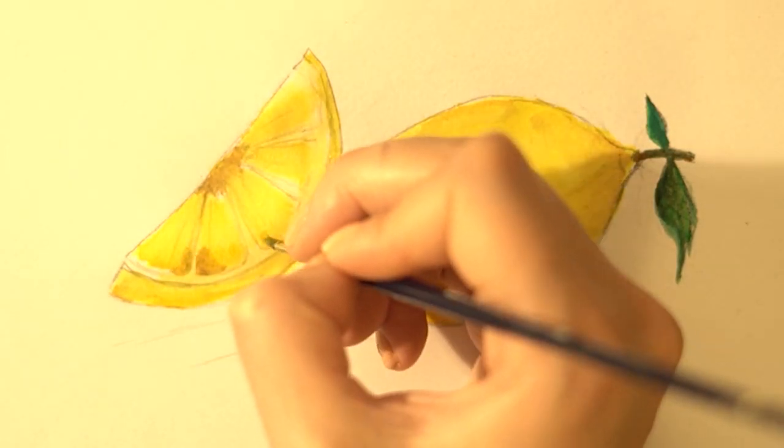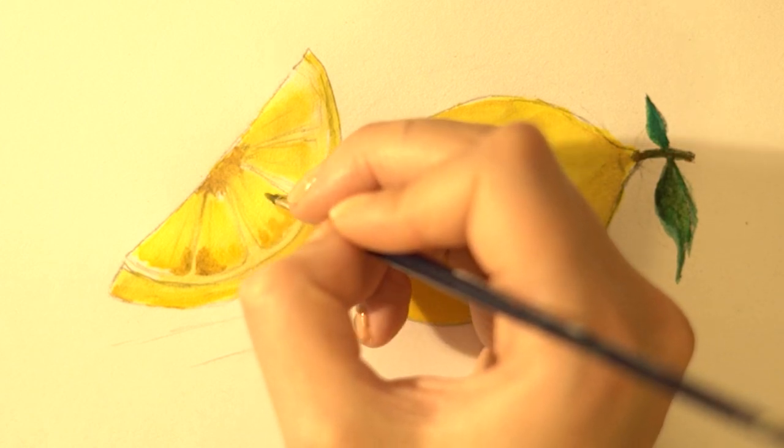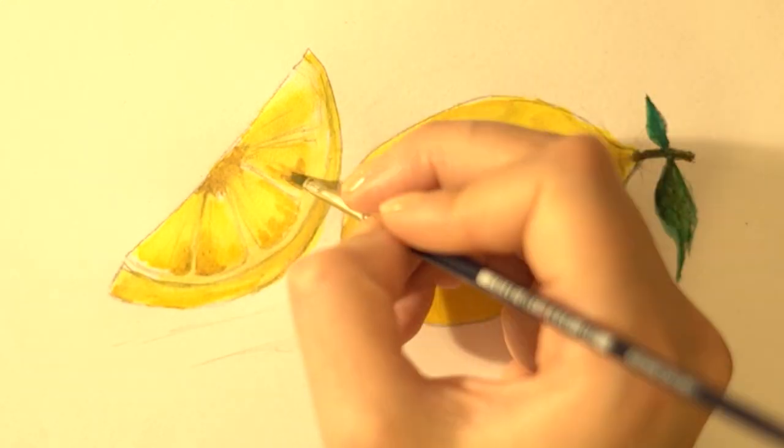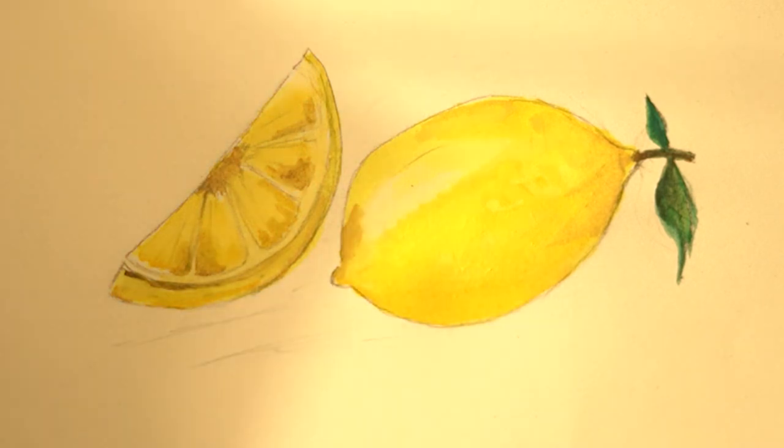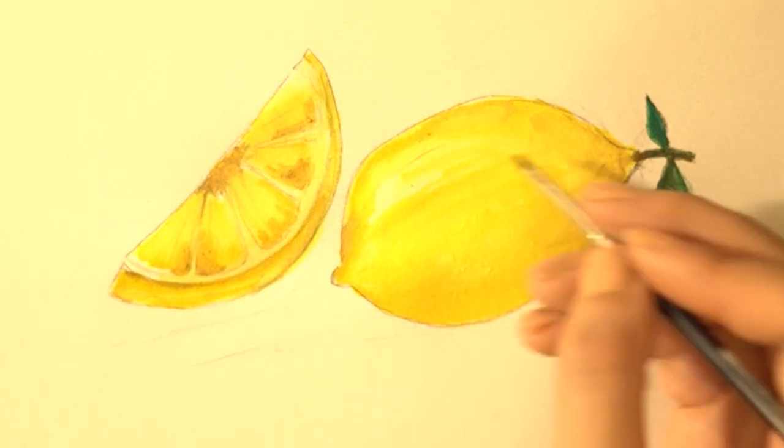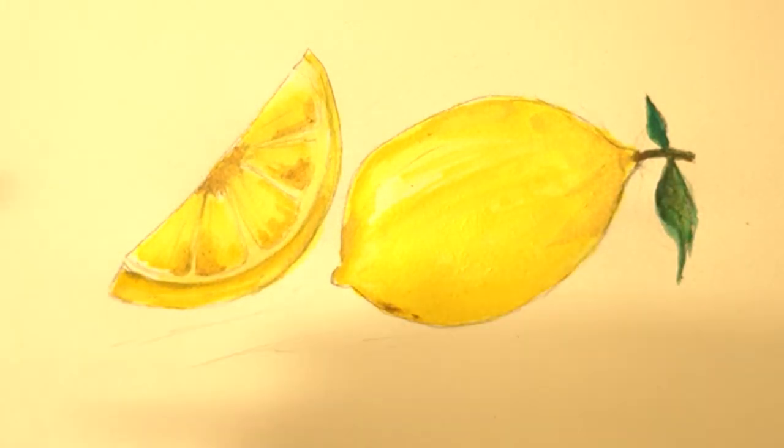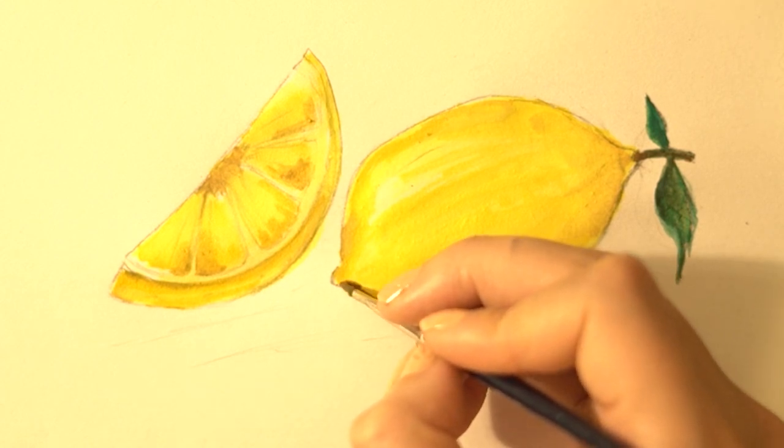Now we finish the lemon and slice with some highlights. A darker brown is used for the shadowy underside of the lemon.